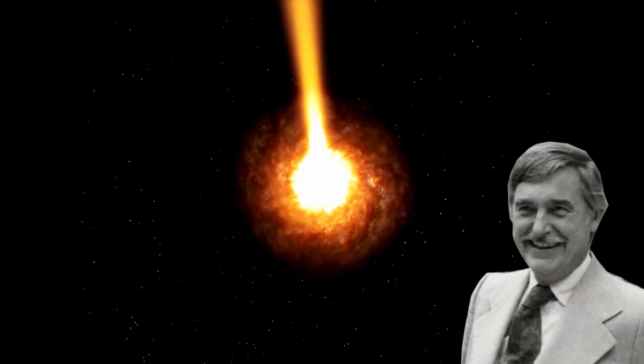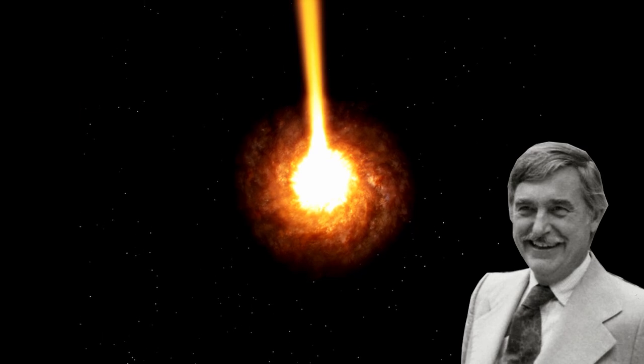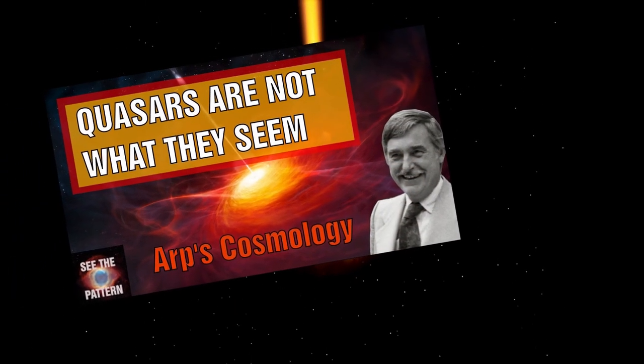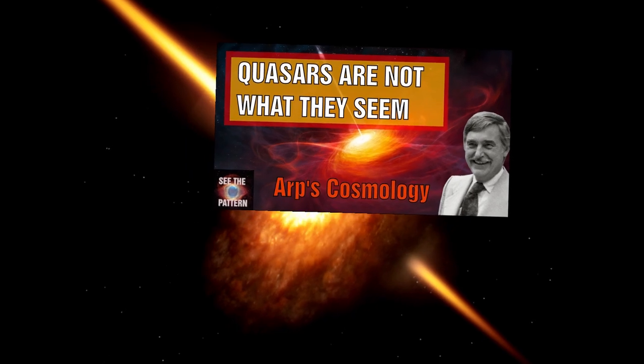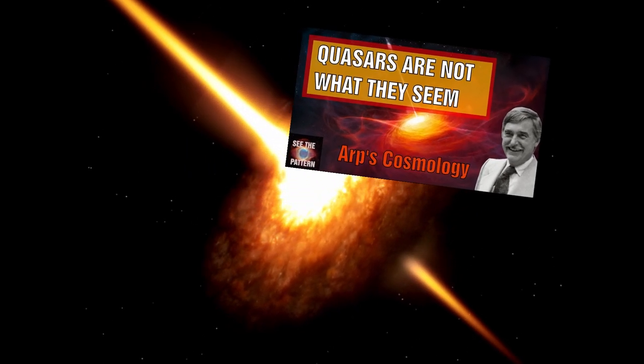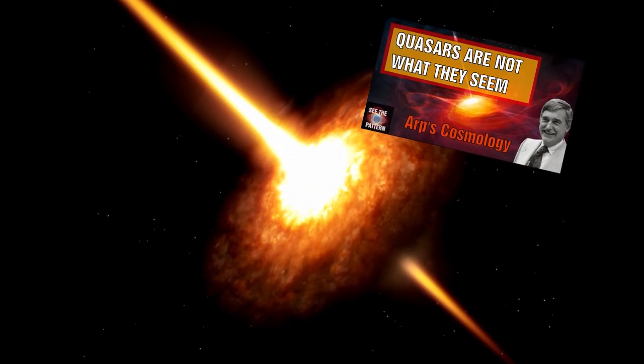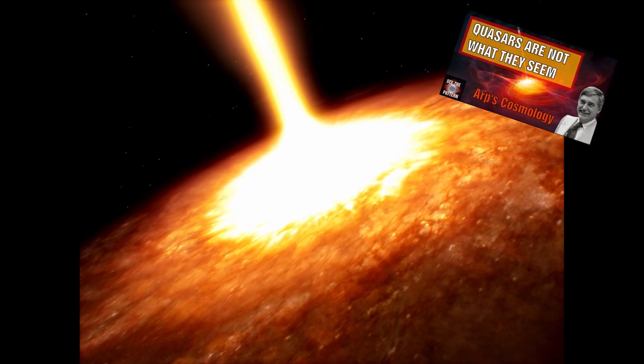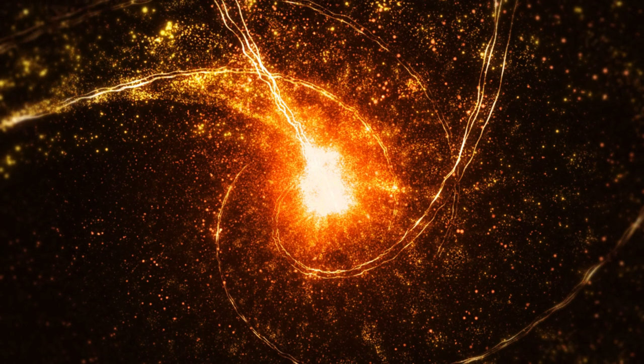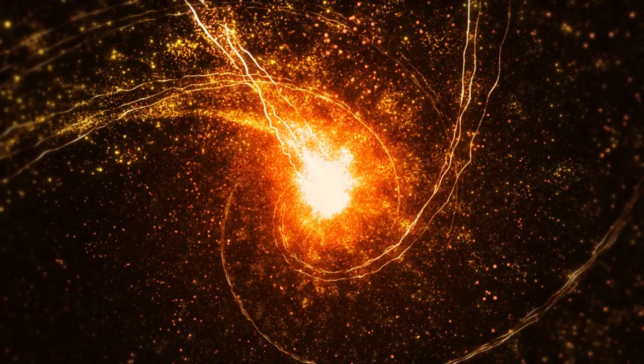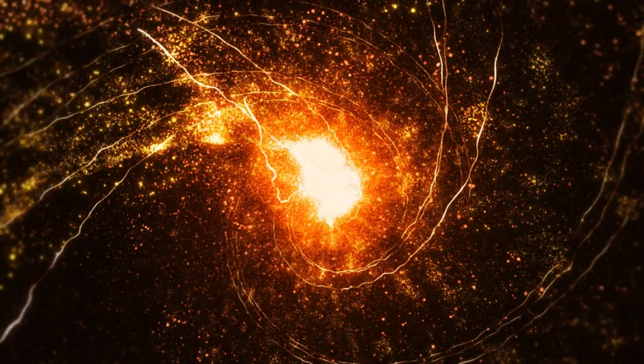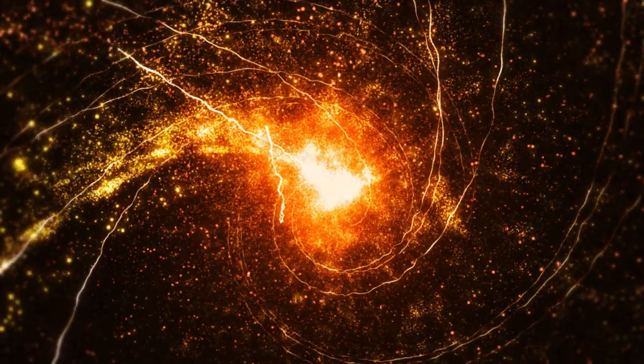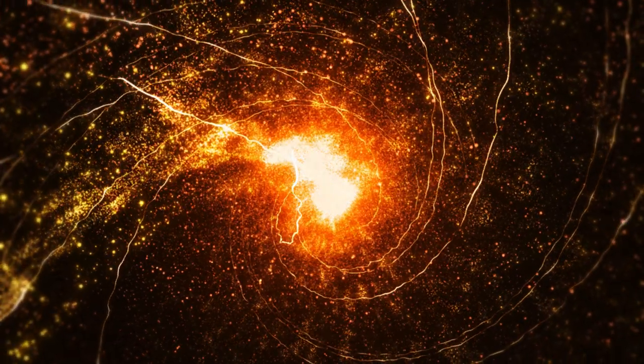Halton Arp catalogued many of these objects. In the video on why we can't trust redshift, I examined some of the evidence that Halton Arp and his colleagues catalogued to underpin the notion that redshift is not only created by an object's movement relative to us. It is now time that we look more deeply into what mechanisms could cause this shift in the spectral emission to cause such a redshift without requiring high recessional velocities.